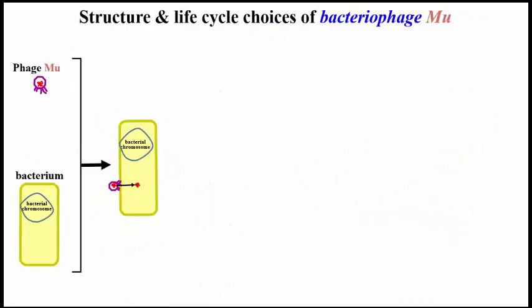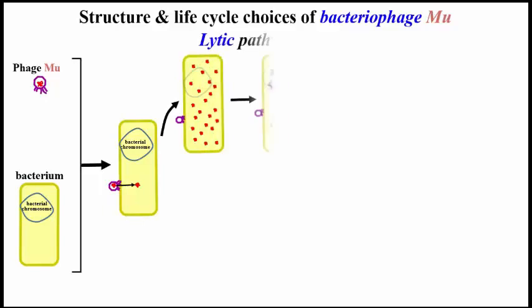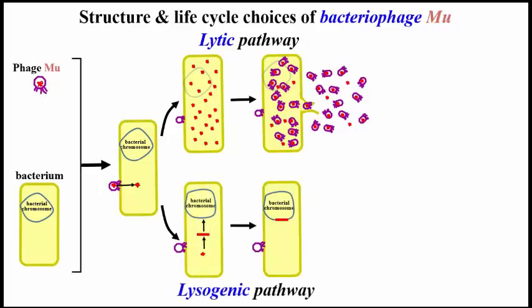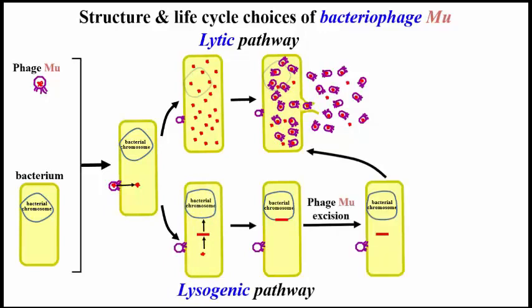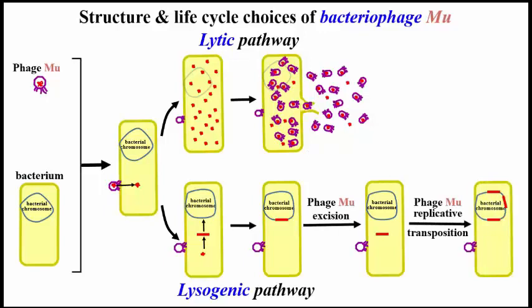Now let's look at the added option for bacteriophage mu. The upper pathway is similar to the lytic pathway for other bacteriophage. Mu can also enter the lysogenic pathway, as shown in the lower part of the illustration, and like other phage it can excise itself and re-enter the lytic pathway under appropriate conditions. Or, once excised, it can instead transpose to other locations in the bacterial chromosome. Like the excision and resumption of lytic activity, transposon activity is often correlated with stress.